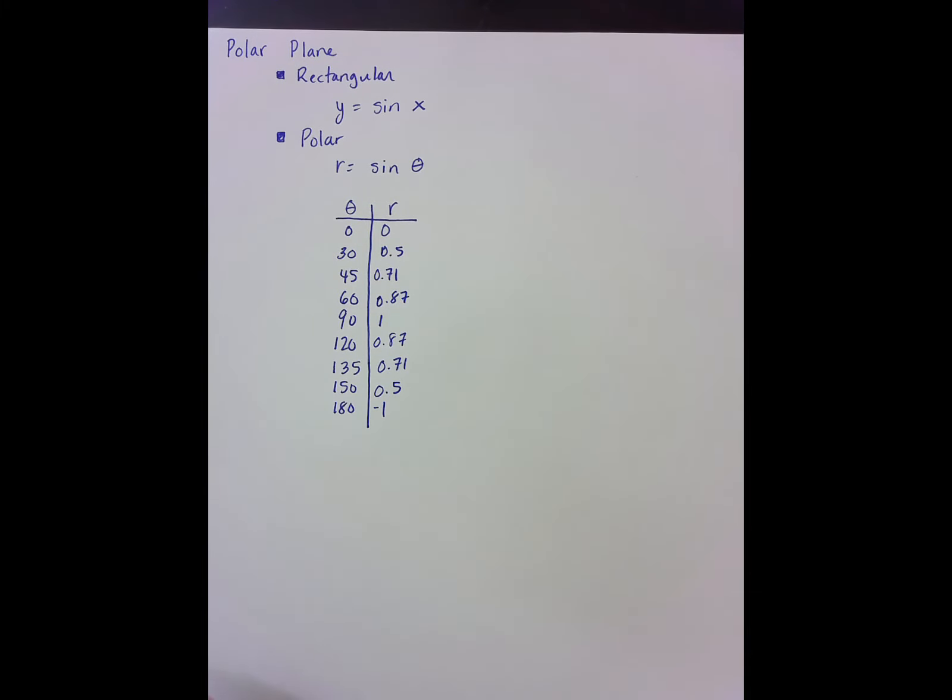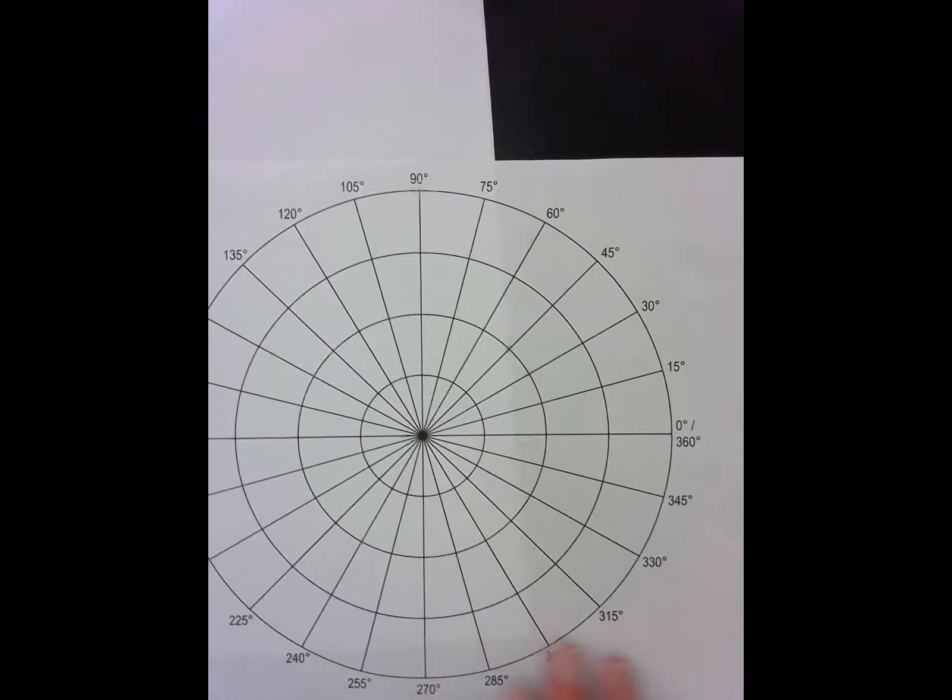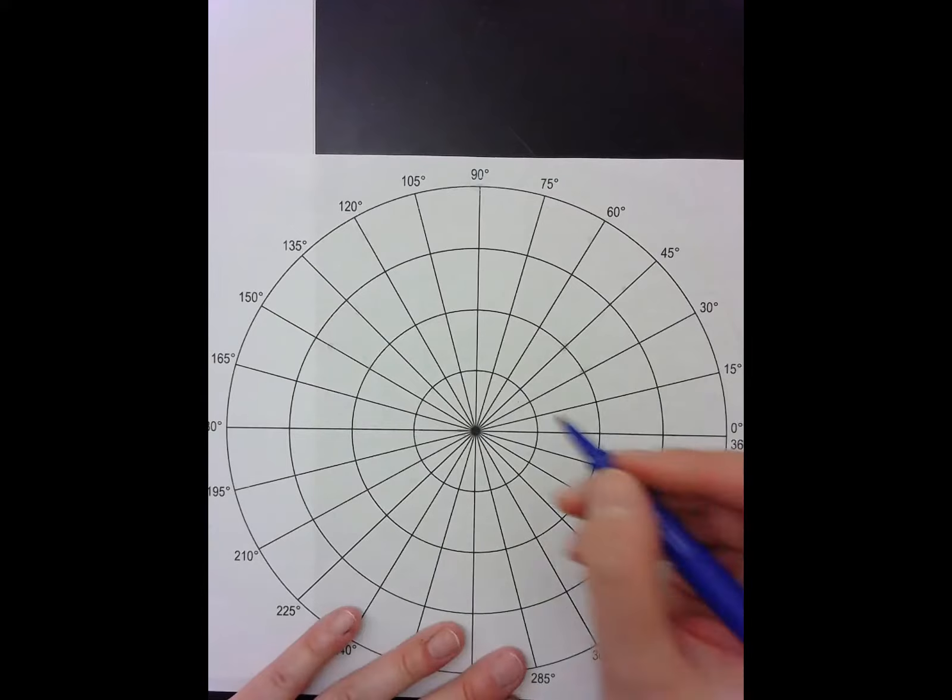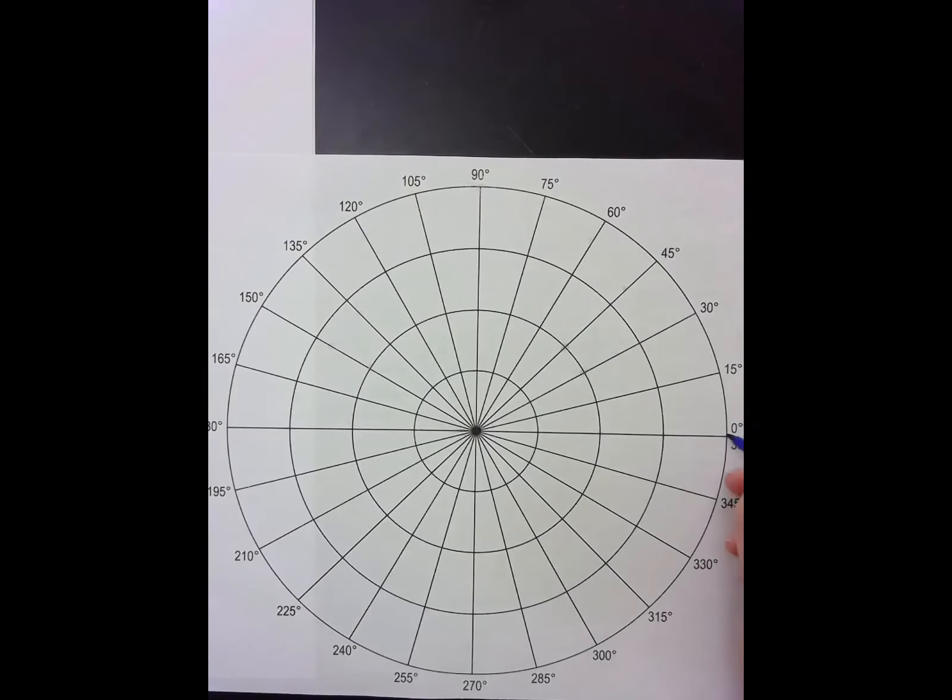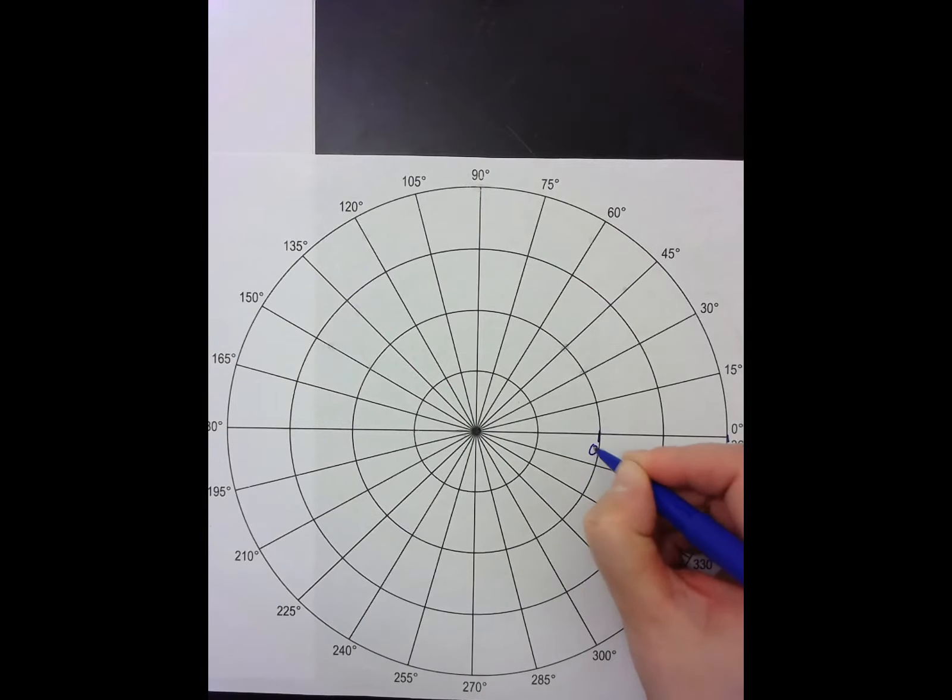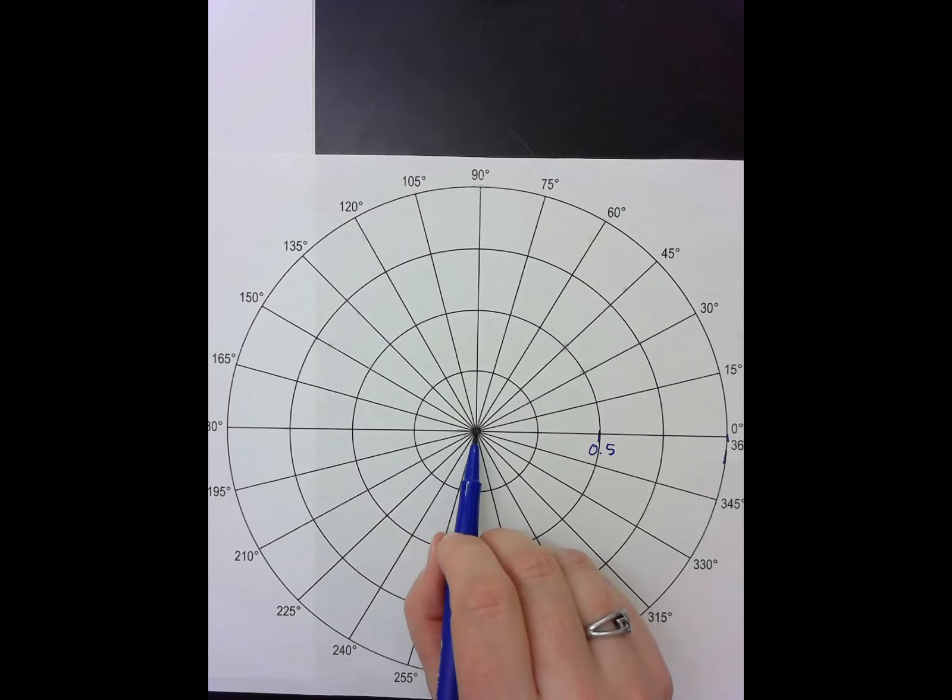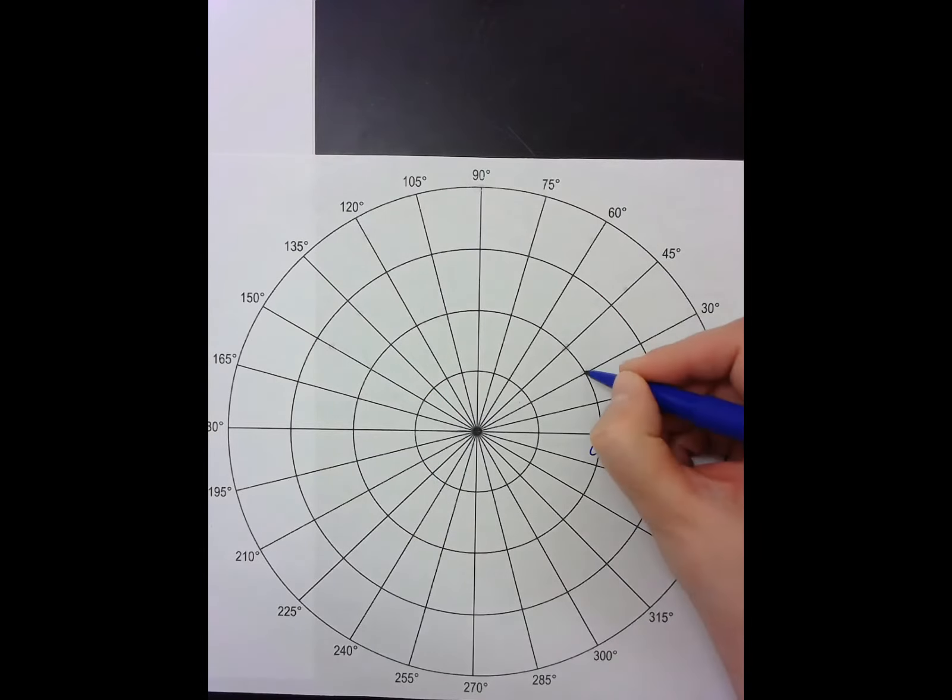Now I can graph this on polar coordinates, which look like this. My first point is 0, 0. I'm going to label this outer circle as 1, which means this is 0.5. My second point is 30 degrees at 0.5, so that's right here. My third is 45 degrees at 0.71.